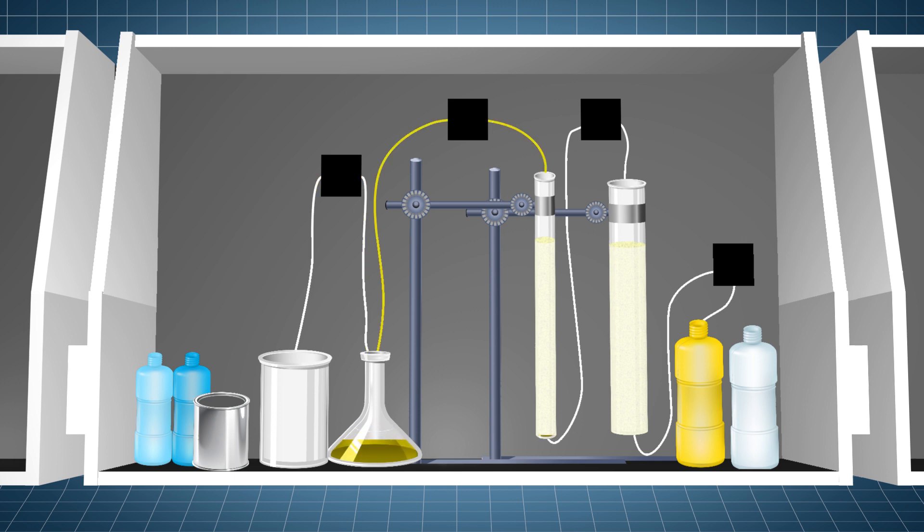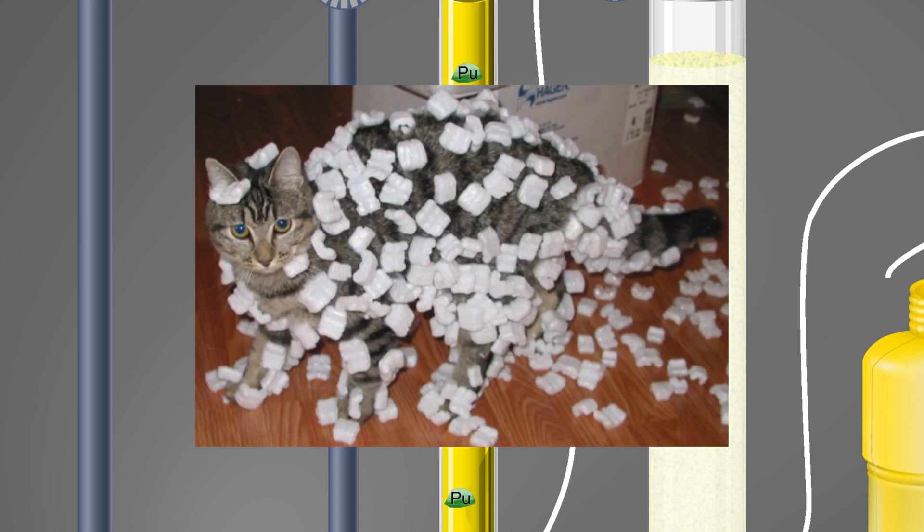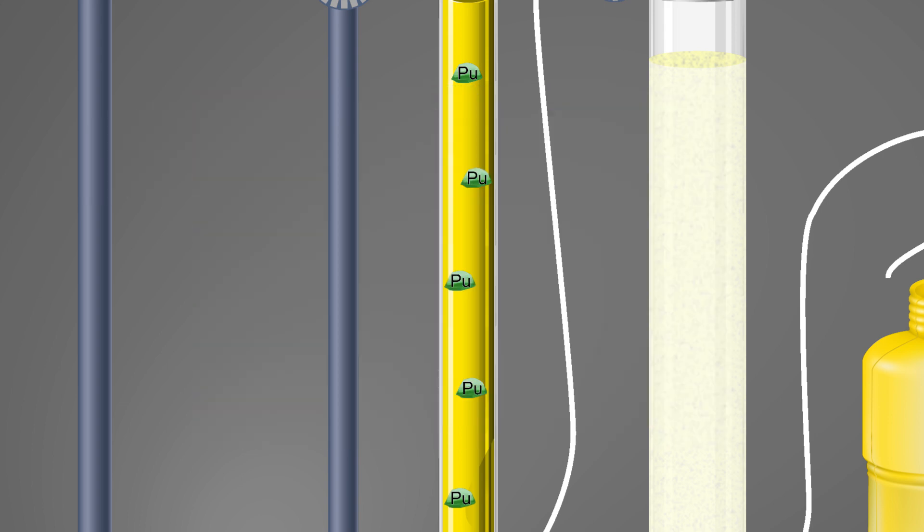From there, the solution is pumped into the first column, the transuranic column. This column contains extraction resin that plutonium is highly attracted to. The same way static electricity can cause styrofoam peanuts to stick to a cat's fur, the extraction resin causes plutonium to stick to it as the solution passes through the column.